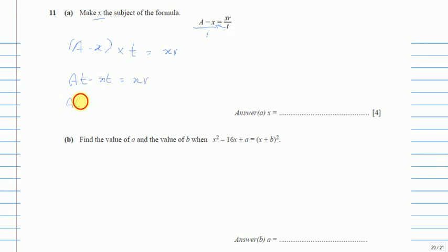It will be at equals xr plus xt. Now x is common in both of them, so I will just take it out: at equals x times (r + t). To check if you've factorized correctly, multiply it back: x into r is xr, plus x into t is xt.